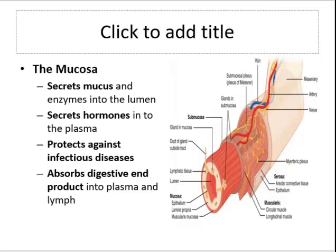The lamina propria is a layer of loose connective tissue underneath the epithelium. It contains capillaries for nutrient absorption and lymph nodes for pathogen defense. The muscularis mucosa lies beneath the lamina propria — it's a thin layer of smooth muscle that can adjust the degree of folding of the mucosa. The submucosa is external to the mucosa, made up of dense connective tissue, and contains blood and lymphatic vessels, lymphoid nodes and nerve fibers. It is a strong layer that provides vascular support to most structures of the GIT wall.